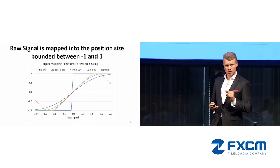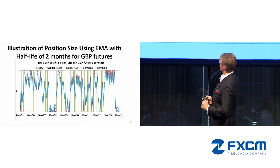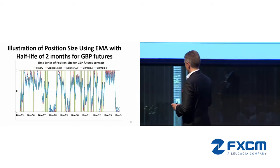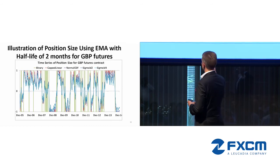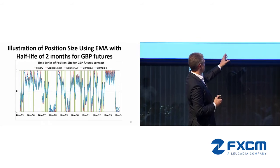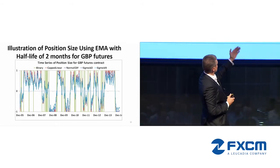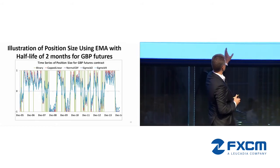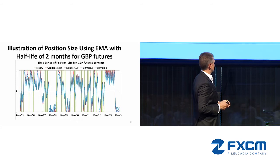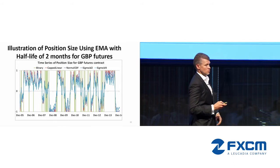The choice of mapping has impact on turnover. Using pound as an example, these mappings transform the smooth raw signal into position size. Binary will always be either long or short, with sustainable periods in each direction. All mappings are more or less in the same direction, with perhaps different magnitudes for position adjustment.